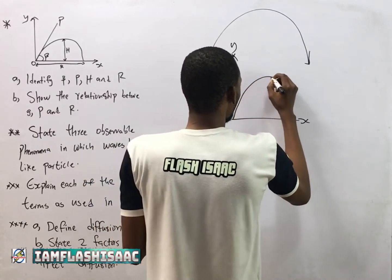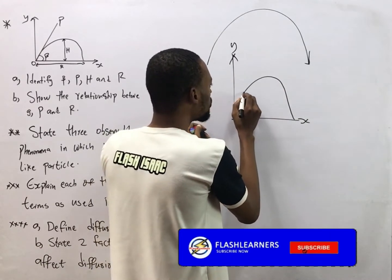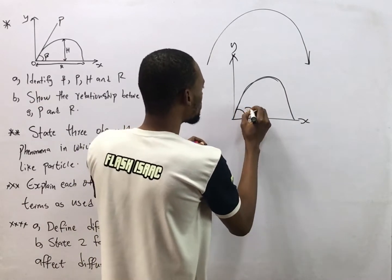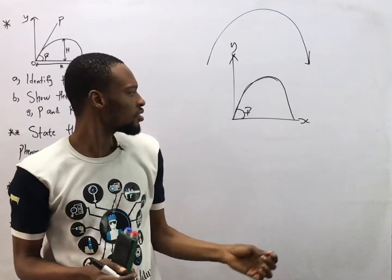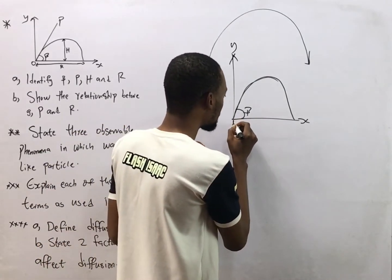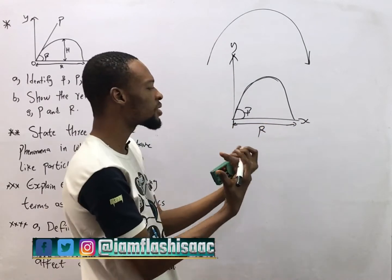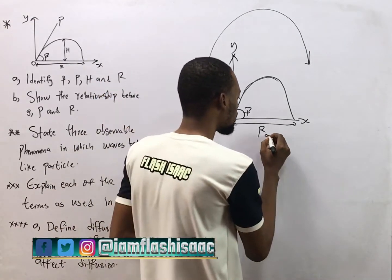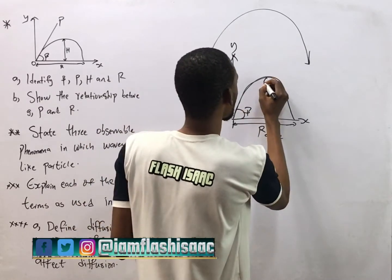When you throw a stone or an object up, it moves freely and comes down. This angle here, which is beta, is referred to as the angle of projection. From here to here is the horizontal distance, and horizontal distance is also referred to as range. This is the range of the projectile.